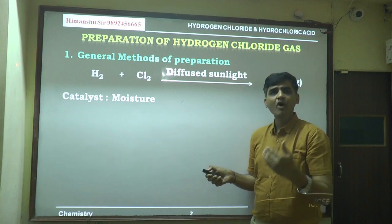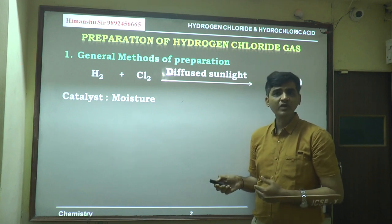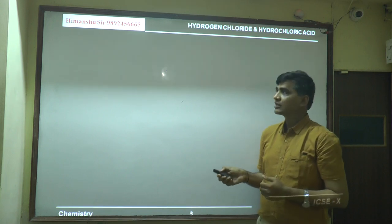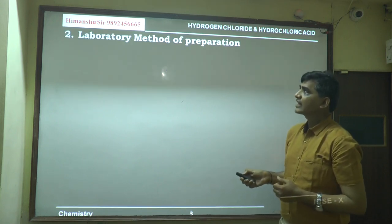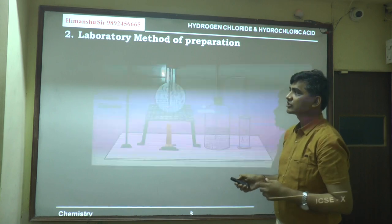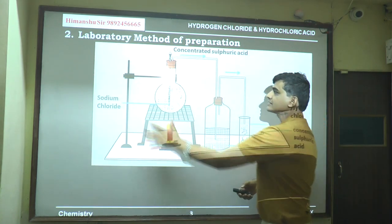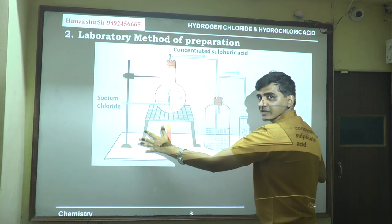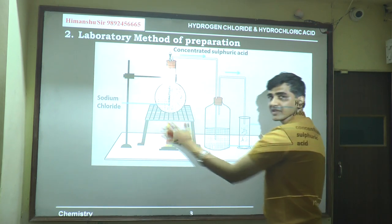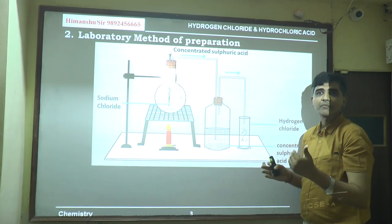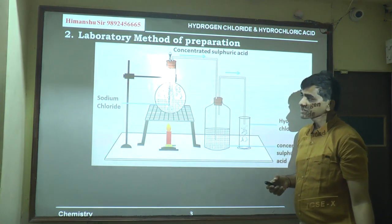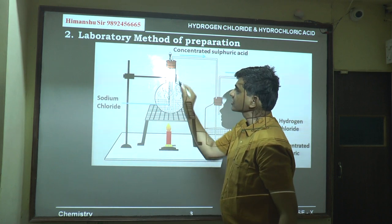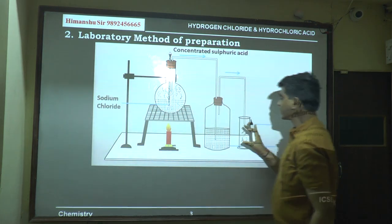Now we will look at the important reaction — how hydrogen chloride gas is prepared in the laboratory, which is a common exam question. In the examination you might be given a diagram and asked diagram-based questions, such as: what are the reactants used for the preparation of HCl gas in the laboratory?